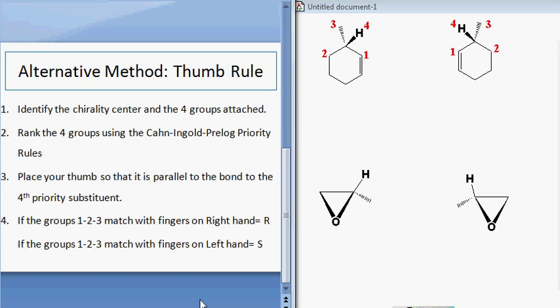If the groups 1, 2, 3 match with the fingers on your left hand, which is curving in a certain direction, that is S. So left is S, R is right, which is nice because right starts with an R.